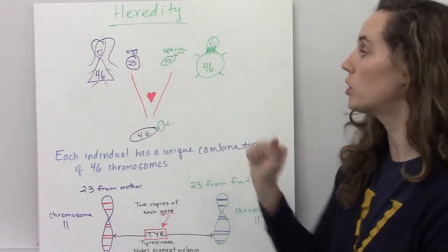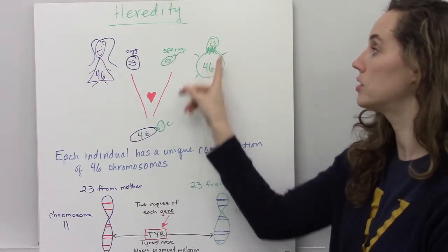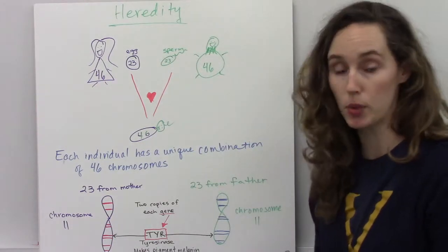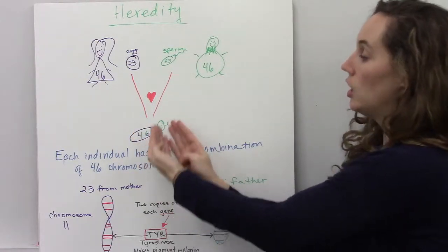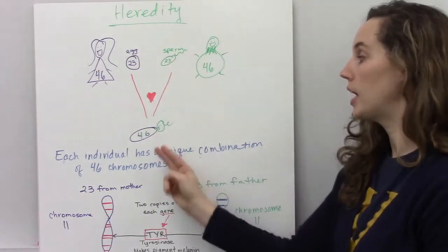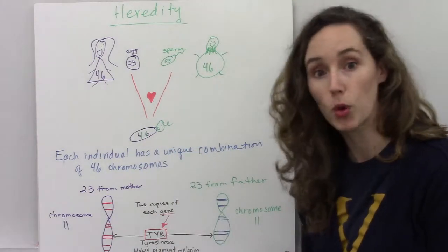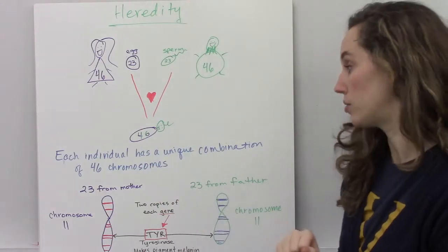Her eggs will have half as many chromosomes as all the rest of her body cells. So her eggs have 23 chromosomes, and our father has 23 chromosomes in his sperm. When the egg and sperm join and fertilize, you have an offspring that also has a unique combination of 46 chromosomes, a combination of the mother's and the father's.